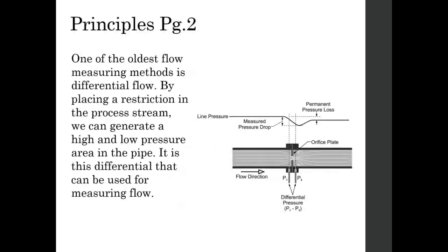One of the oldest flow measuring methods is differential flow. By placing a restriction in the process stream we can generate a high pressure and a low pressure area in the pipe. As we see in the diagram at the orifice plate, the area just in front creates a high pressure area and the area just after creates a low pressure area. This gives us an amount of pressure loss across the front and back of that orifice plate — this is the physics we use to determine the differential pressure.